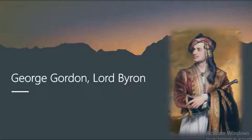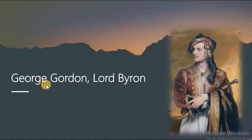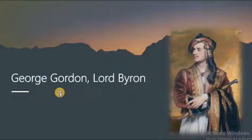Welcome, third-year students, to our new lecture in poetry. As you know, we have reached our last poet concerning the Romantic period: George Gordon, whose name is George Gordon but who is mostly referred to as Lord Byron. He has this title 'Lord' and is mostly known by this name more than by his given name. We are going to have a brief idea about some concepts related to the poem, and also learn something about Lord Byron's life, so that we can relate all this information to the analysis of our poem.